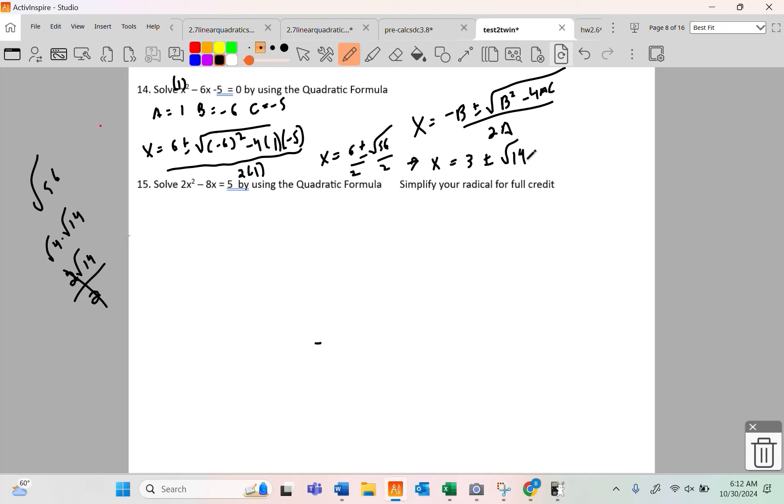You can always simplify the radical, right? The only difference between 14 and 15, besides the numbers got a little bigger, is we have to be set equal to 0. So 2x squared minus 8x minus 5 is now equal to 0. Then you pick out your a's, your b's, and your c's. For those of you that struggle with a, b, and c, try writing them down a couple times. a is 2, b is negative 8, and c is negative 5.